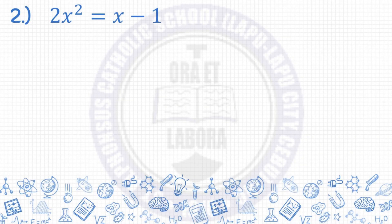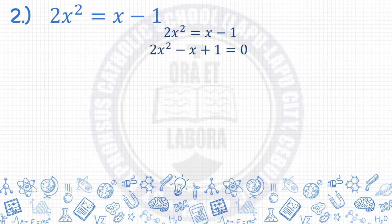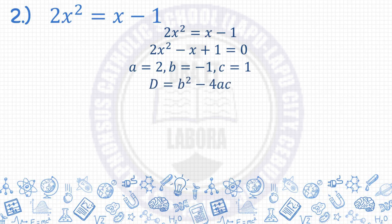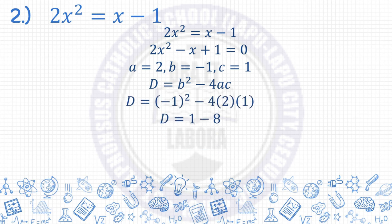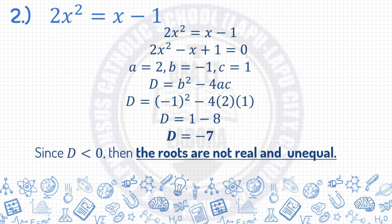Number 2: 2x squared equals x minus 1. First, transform the given equation into its general form. The general form is 2x squared minus x plus 1 equals 0. Next, determine the values of a, b, and c: a is 2, b is negative 1, c is 1. Write the formula for the discriminant: d equals b squared minus 4ac. Substituting, negative 1 squared is 1, and negative 4 times 2 times 1 is negative 8. So 1 minus 8 is negative 7. Since the value of the discriminant is less than zero, the roots are not real and unequal.